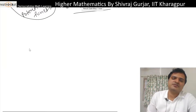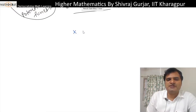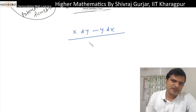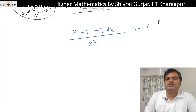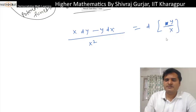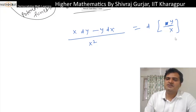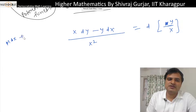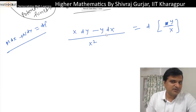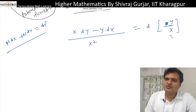Another example: (x dy - y dx) / x² = 0. We can recognize this as d(y/x) because by the quotient rule, d(y/x) gives (x dy - y dx) / x². So this is of the form M dx + N dy = df, and the potential function is y/x. Therefore the solution is y/x = c.